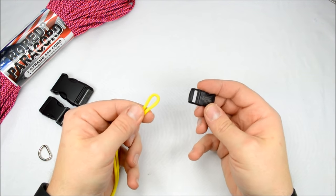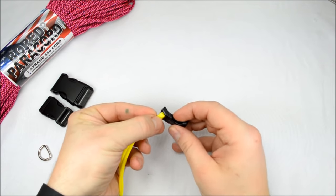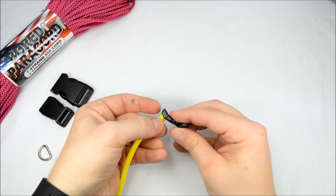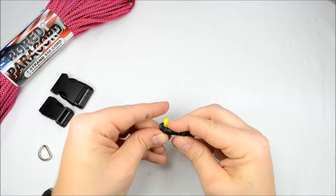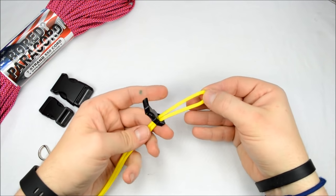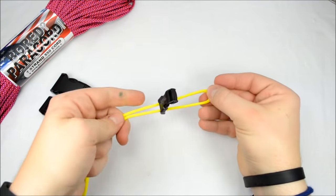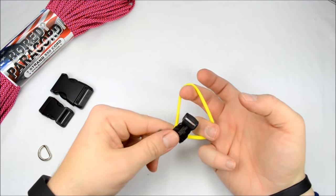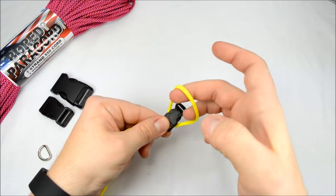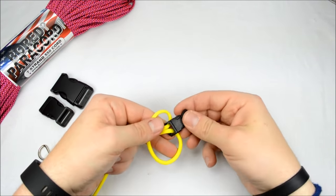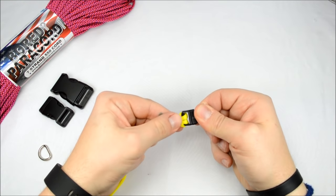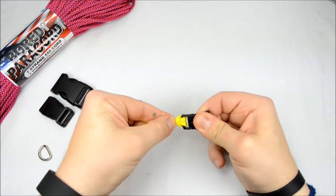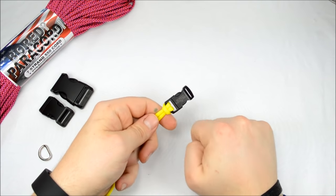And what I like to do is take the center point right through the top of your buckle. Pull it through like that. And then you're just going to open this loop up and pull it up over your buckle and pull on the buckle. And that gives you your cow's hitch. That's how you attach your paracord to one end of your buckle.